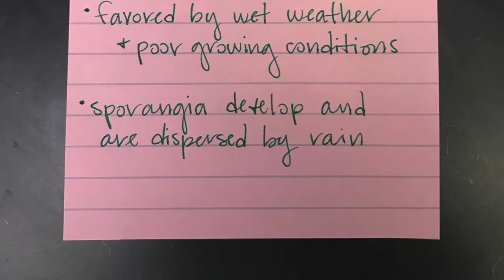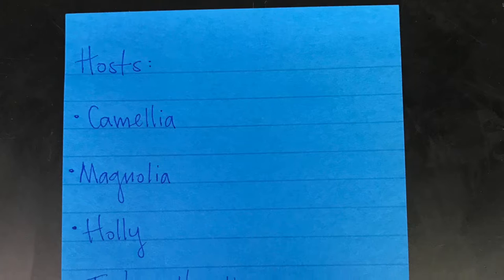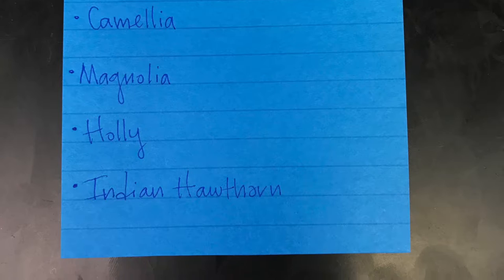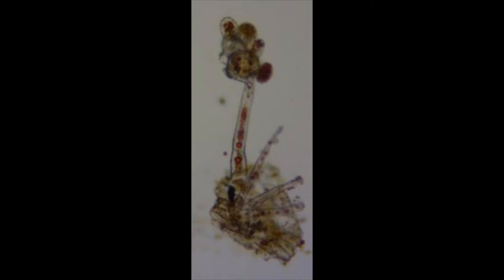The plants most commonly affected by this pathogen tend to have leathery leaves, such as those found in camellias, magnolias, holly, Indian hawthorn, and several others. Here is a picture of the sporangia of algal leaf spot.